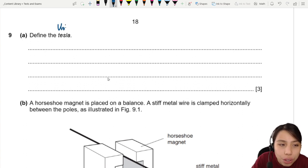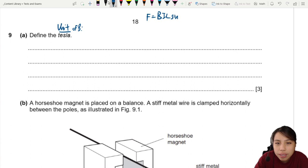So Tesla is the unit of B. Don't define B. Define the unit. So how we can start with is usually we use standard one, our B I L sine theta, and we rearrange for B. So this is F over I L sine theta. You need to talk about the units of every single quantity in this equation.